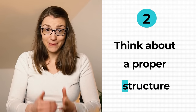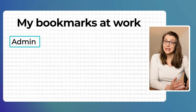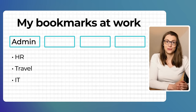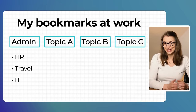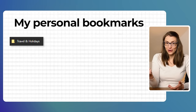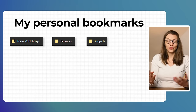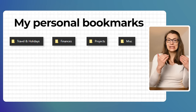Second, think about the structure that makes sense for your bookmarks. At work, for example, I have a folder for admin with subfolders for HR, travel, and IT-related documents. Other folders are topic-related, where I save bookmarks related to specific topics with subfolders within them. For personal use, I have folders for travel and holidays, finances, projects, and other miscellaneous topics — within each folder I have subfolders. For example, in my travel folder I have subfolders for hiking, biking, and overall service providers such as airlines.